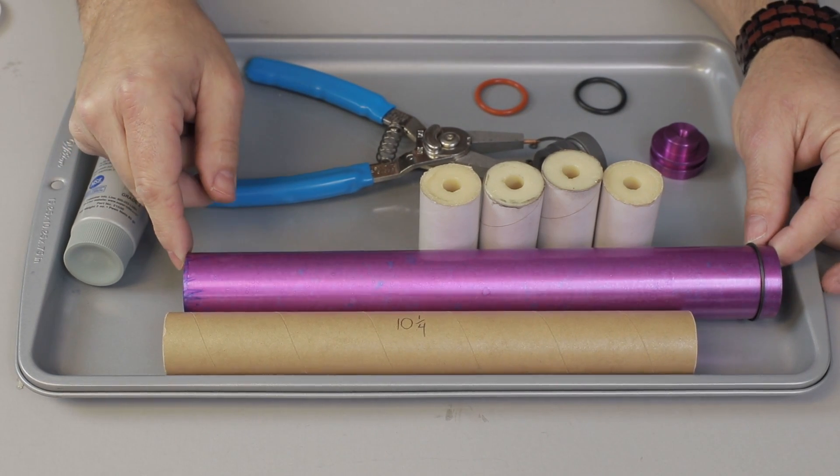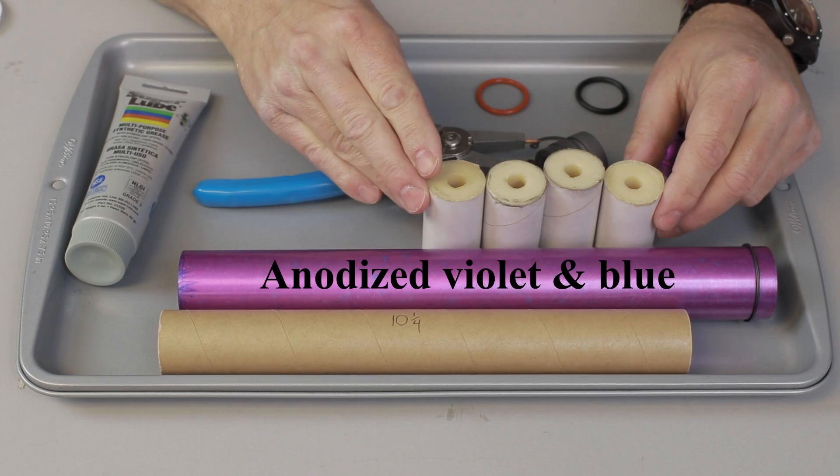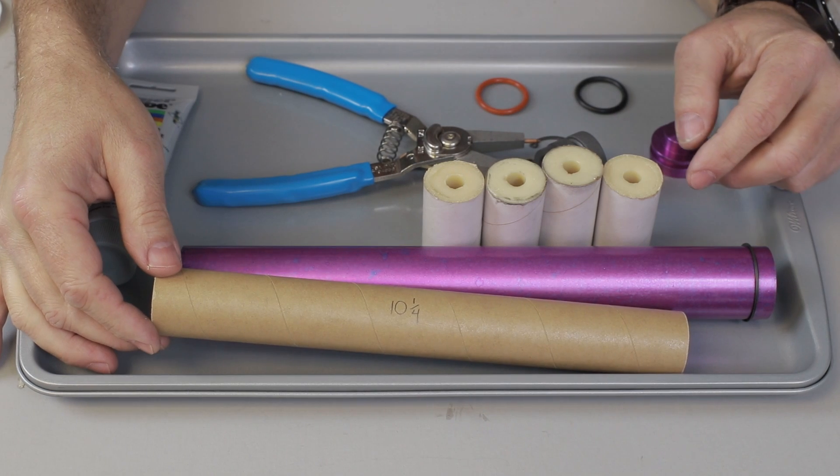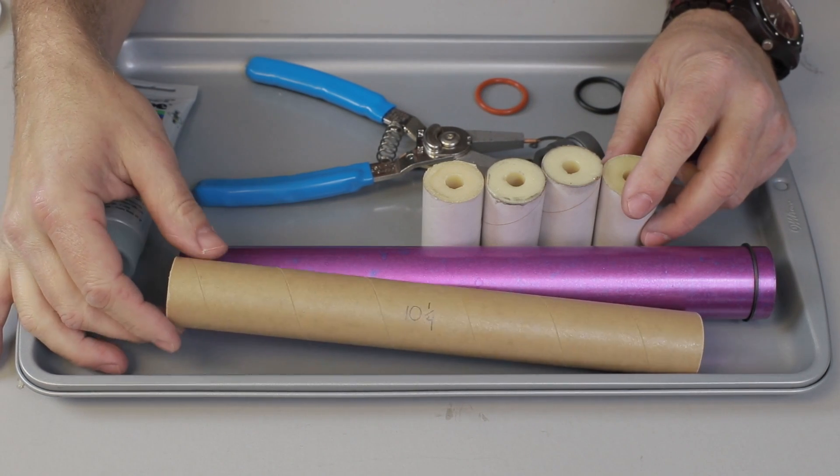To assemble the four grain binder design motor, I have my grains ready, all trimmed up and ready to go. I cut the liner to ten and a quarter inches, which fits pretty well after doing a test fit.